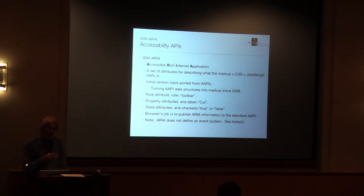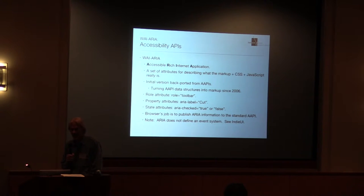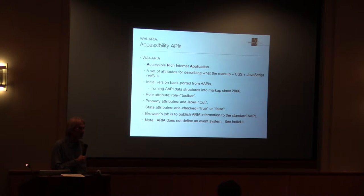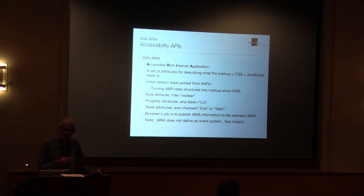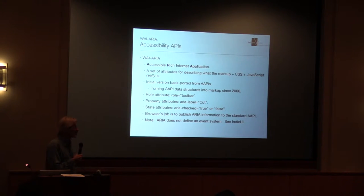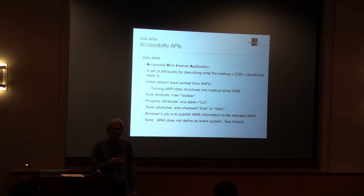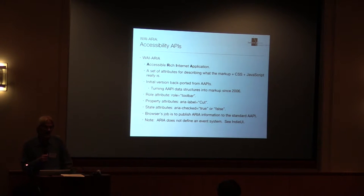There is a role attribute — for example, you can mark something as a toolbar by saying role='toolbar'. There are a large set of property attributes; you can create labels with aria-label. There are a whole set of state attributes — things that change over time. For example, aria-checked can be true or false. The browser's job is now to pick up the ARIA information and push it out to the standard accessibility API, paying attention to the ARIA markup in the document.